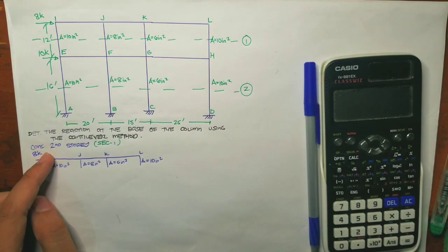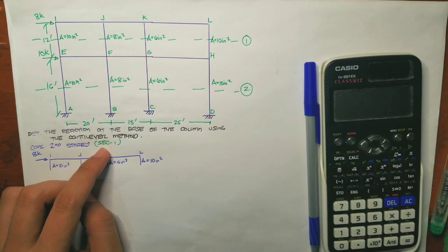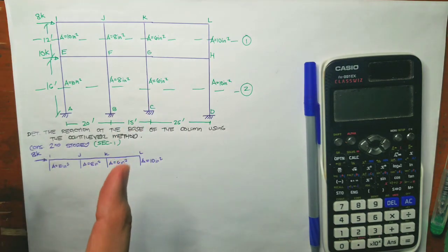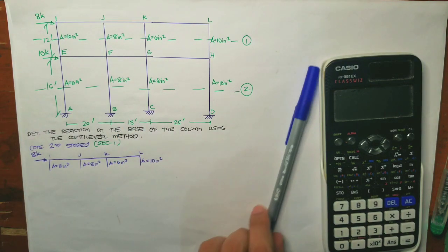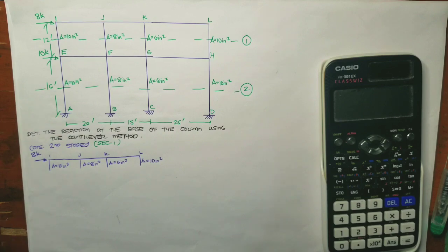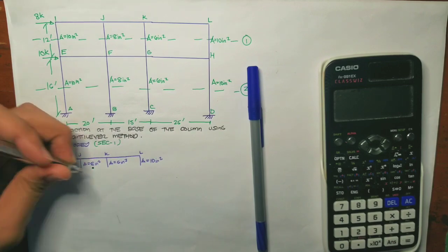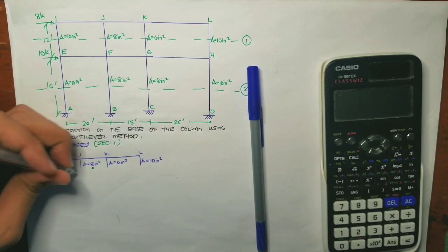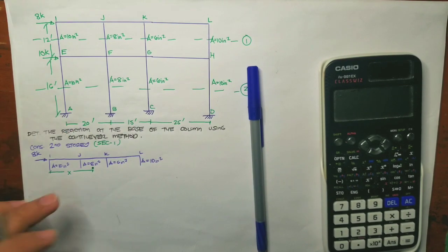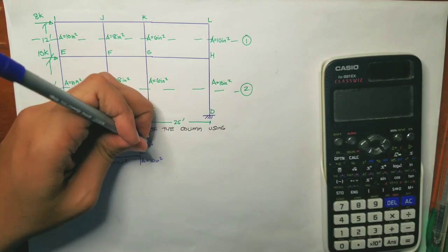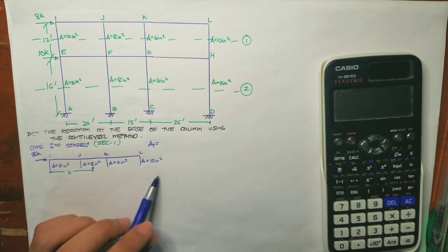Considering the second story using section 1: from assumption one, the point of inflection is at the midpoint of all members. I cut at the midpoint of the column and isolate the upper portion. Assuming the center of gravity is at distance x from the leftmost reference point, we first determine the total area of the 4 columns: 10 + 8 + 6 + 10 = 34 inches squared.